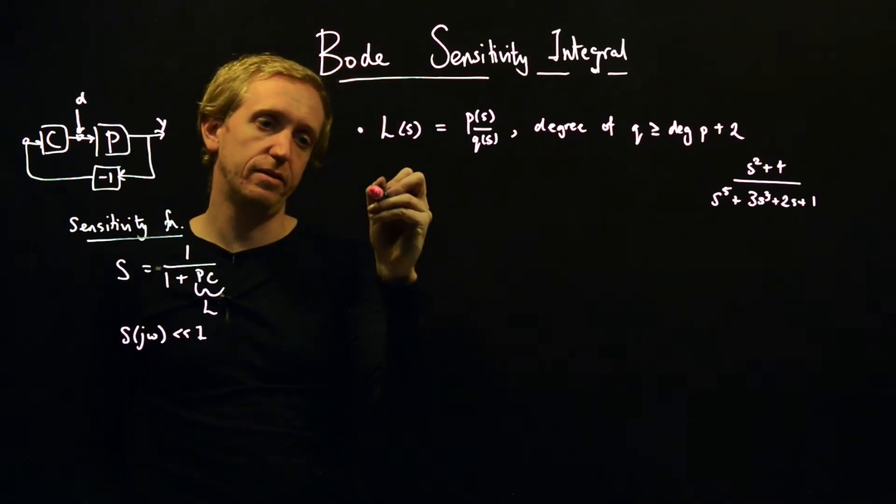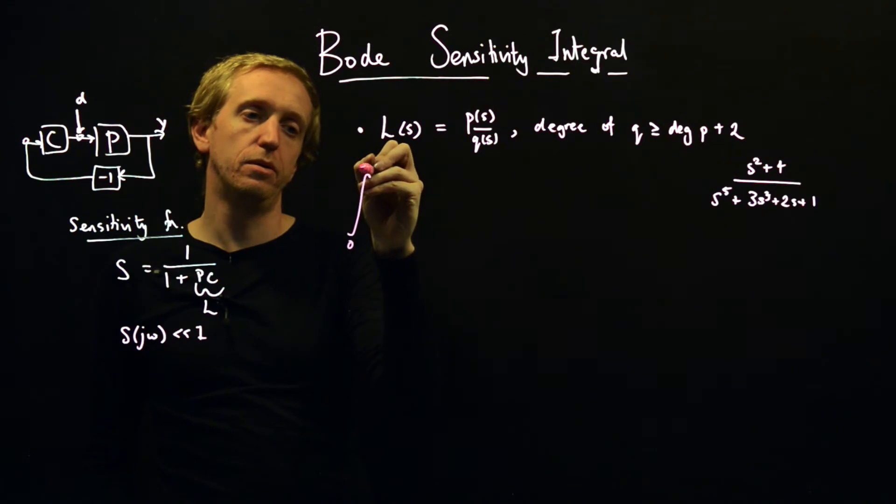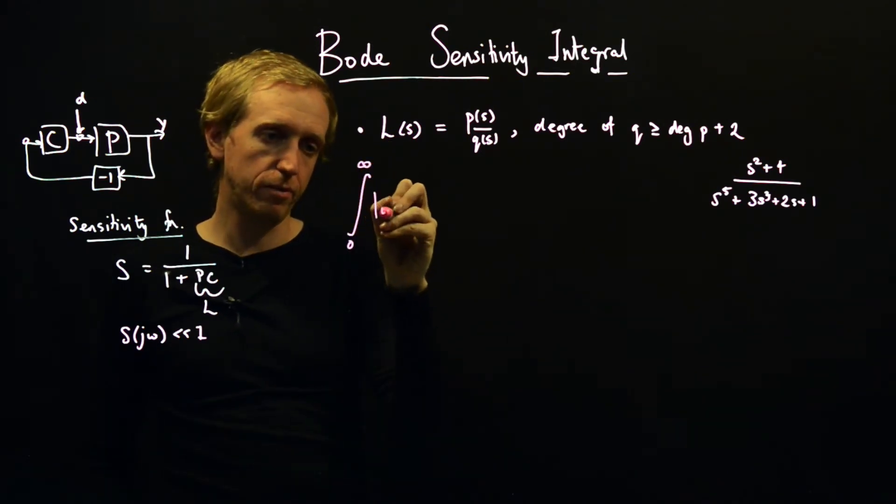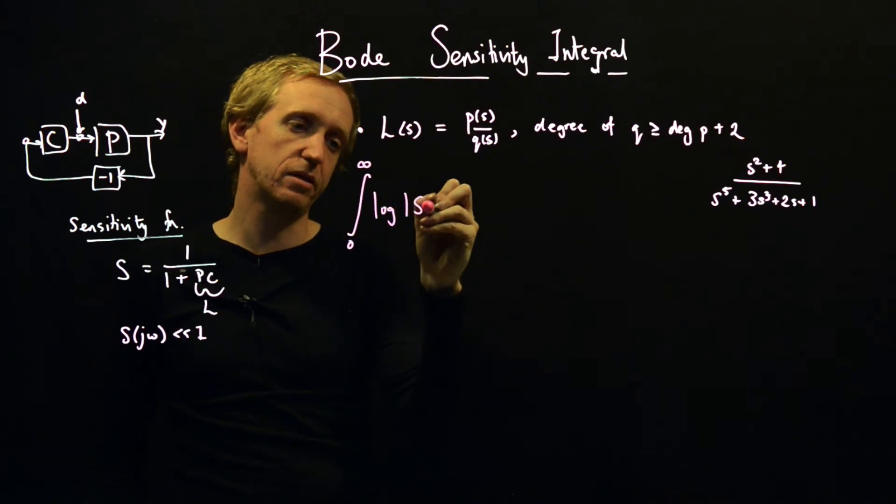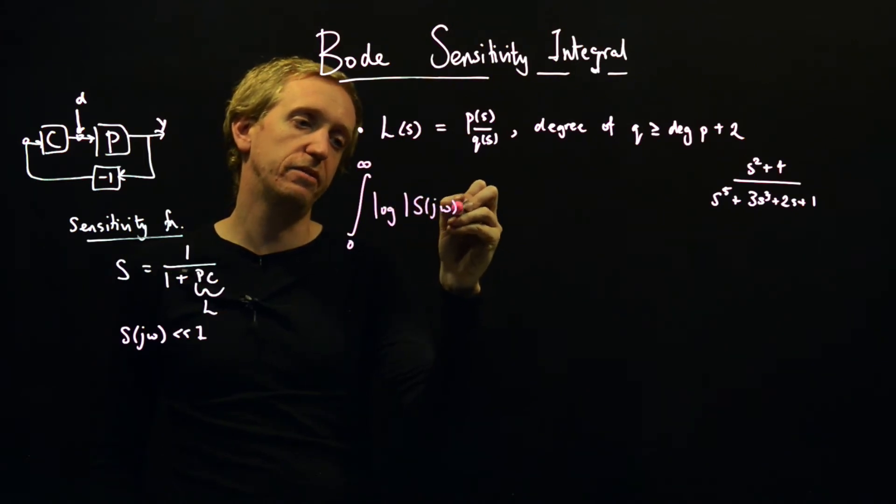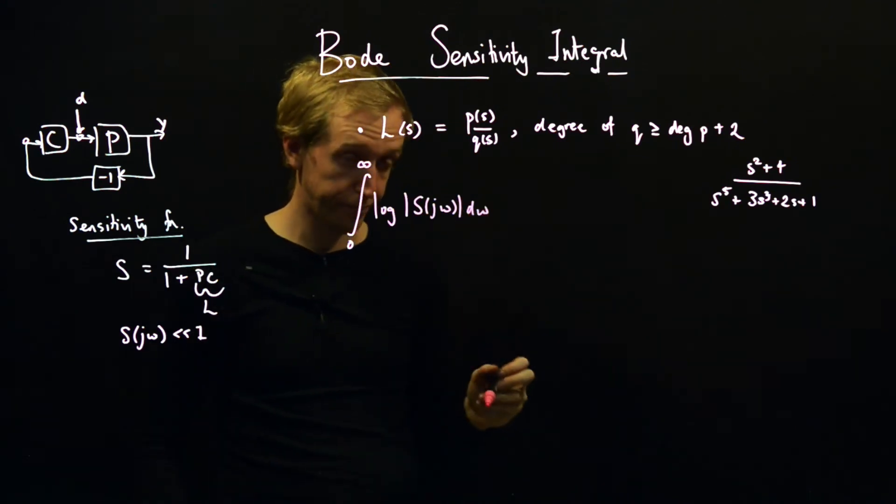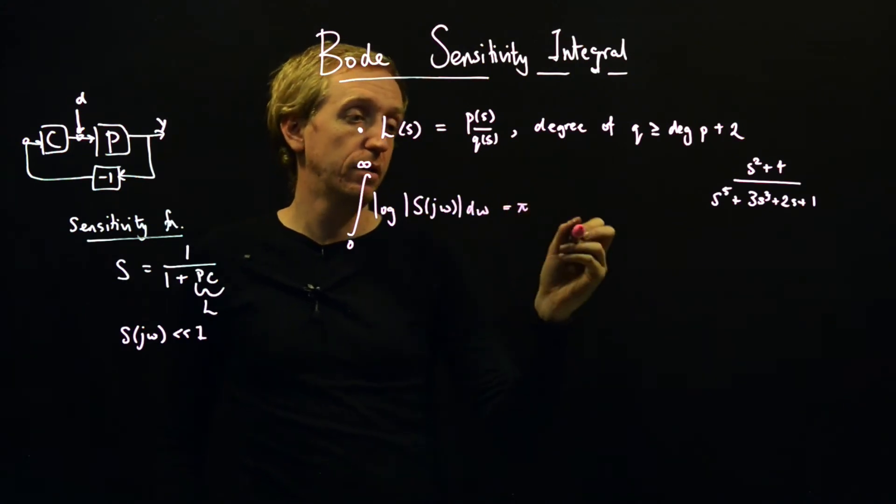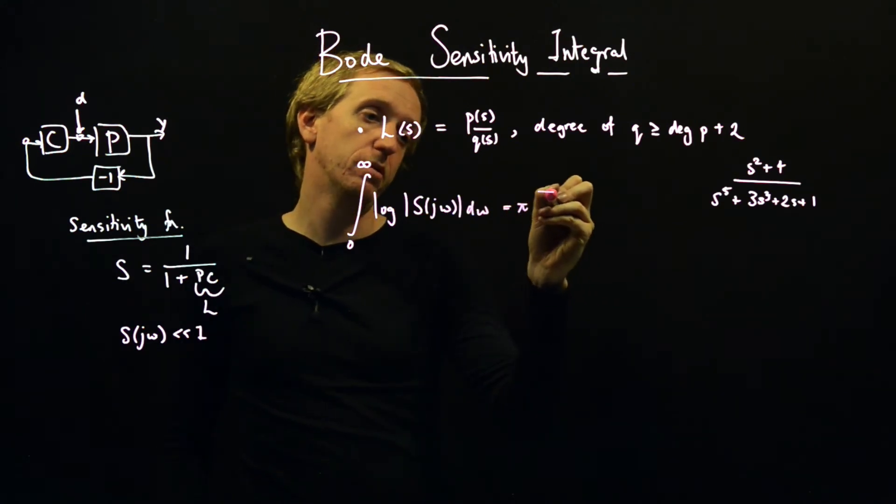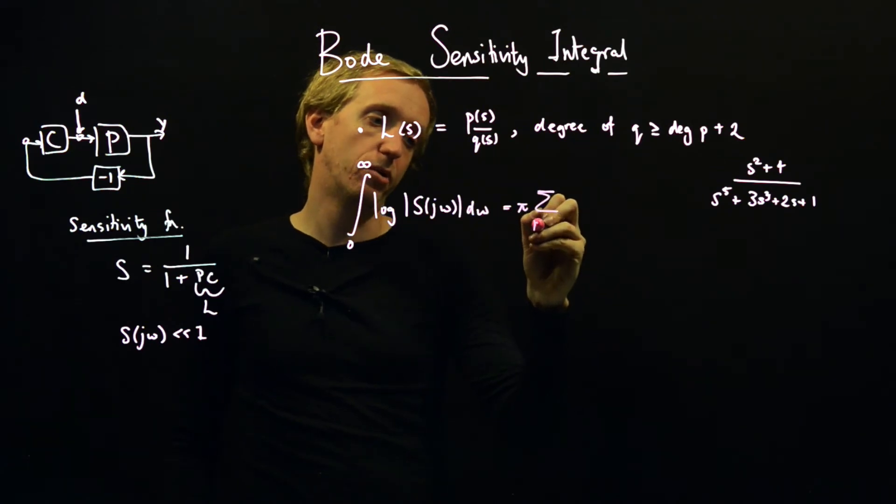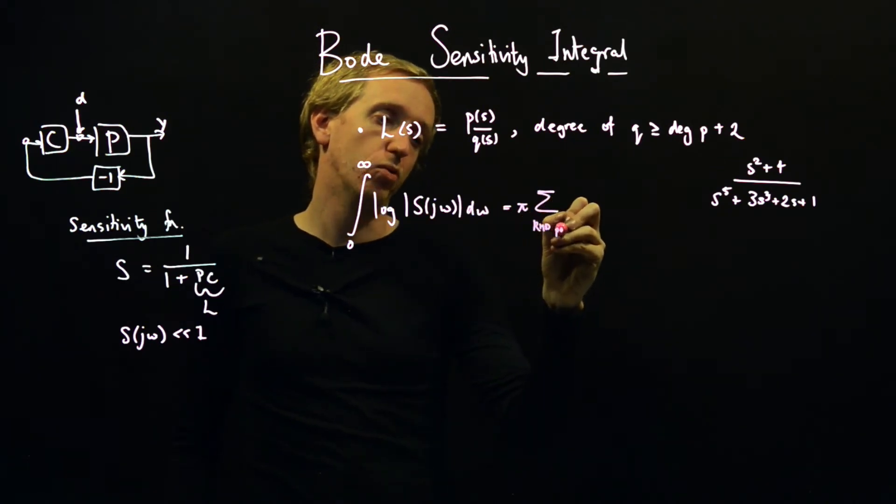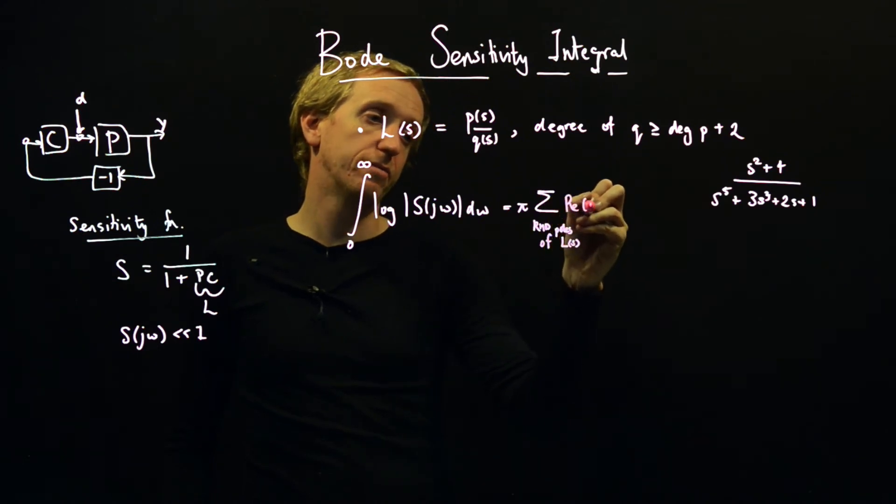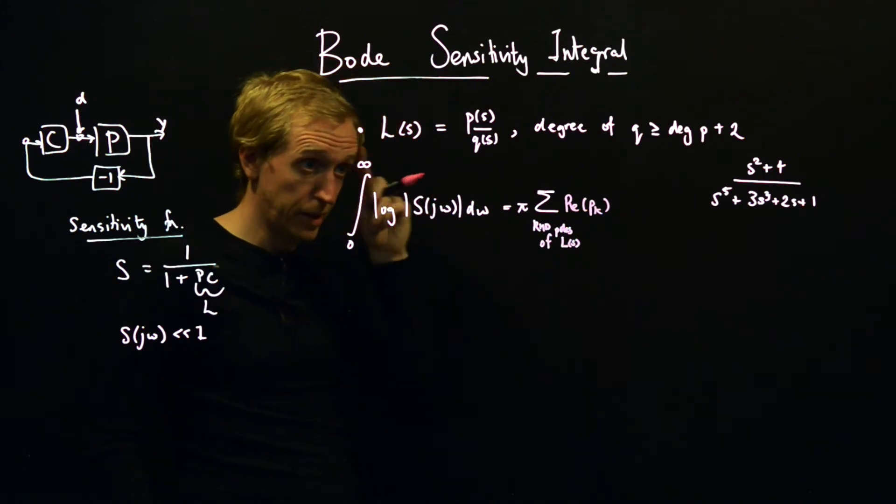And what does the Bode sensitivity integral then say? It says that the integral from zero to infinity of log of the size of the sensitivity function with respect to omega is equal to a constant. And that constant is π multiplied by the sum over right half plane poles of L of s. And then in here we have the real part of those poles.